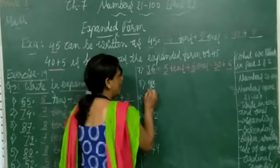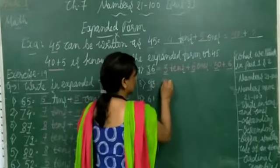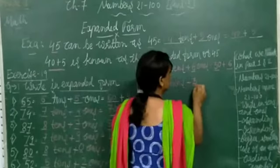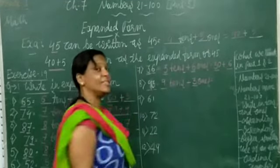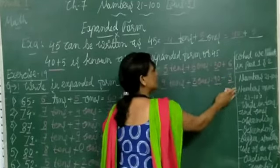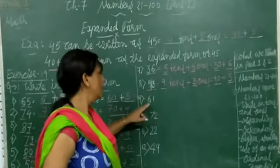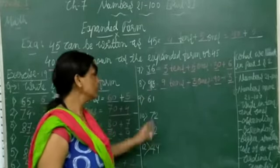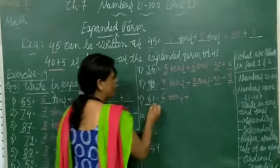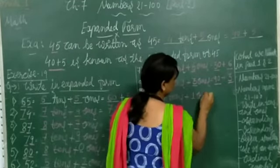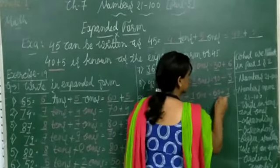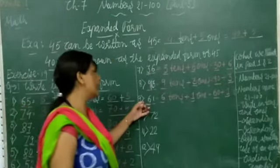Now 93 — in 93, how many 10s? 9 10s. And how many 1s? 3 1s. So 9 10s equals 90, plus 3 1s — 90 plus 3 is equal to 93. Now 61 — in 61, how many 10s? 6 10s. How many 1s? 1 one. So 6 10s equals 60, plus 1 one — 60 plus 1 is equal to 61.